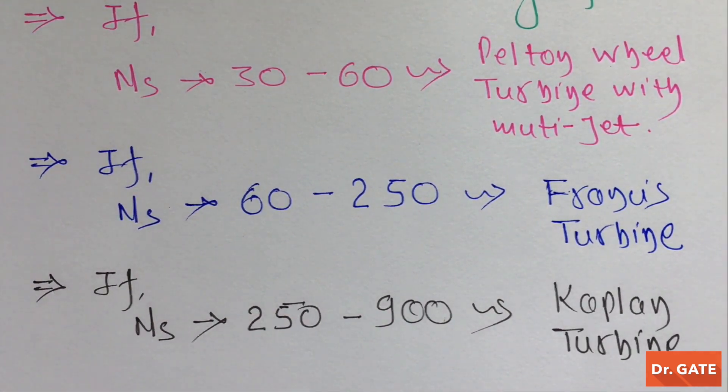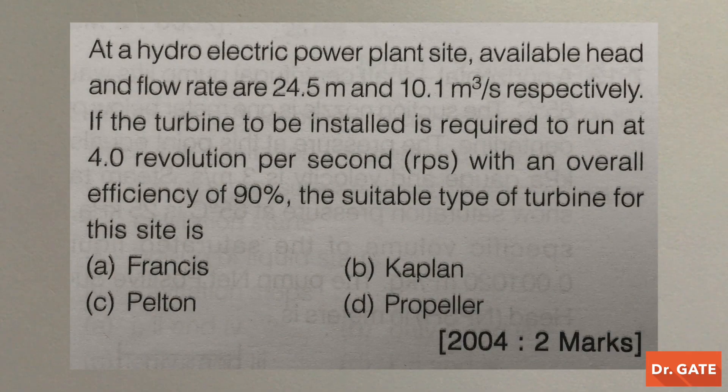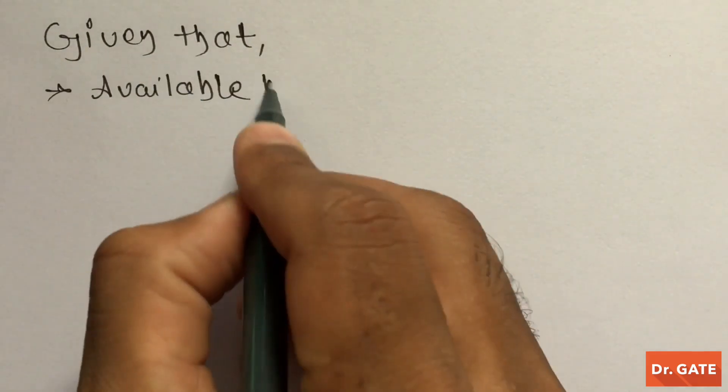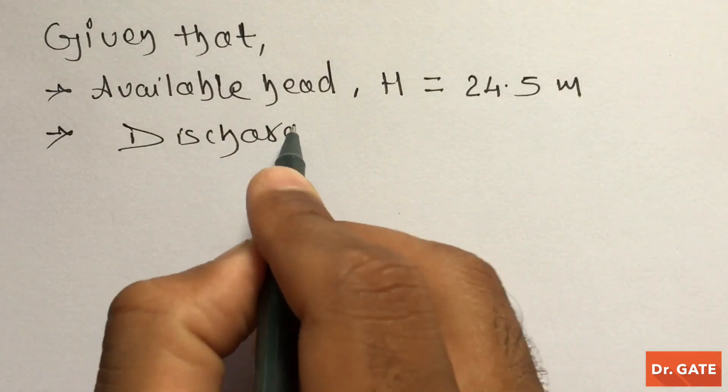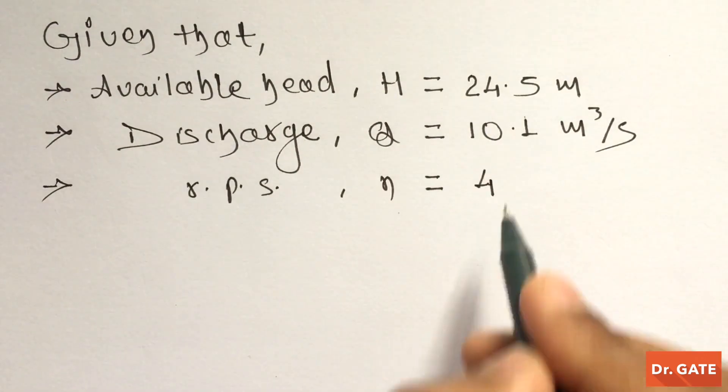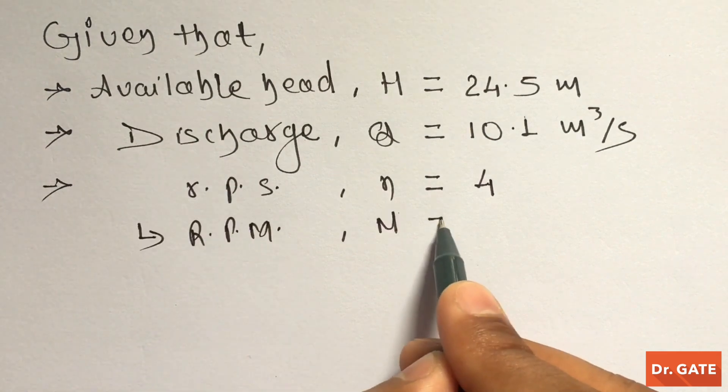Let's solve a numerical for even more better understanding. At a hydroelectric power plant site, available head and flow rate are 24.5 meter and 10.1 meter cube per second respectively. If the turbine to be installed is required to run at 4.0 revolution per second with an overall efficiency of 90%, the suitable type of turbine for this site is. So, what are given? Available head which is 24.5 meter. Discharge which is 10.1 meter cube per second. RPS which is 4. So, from here we can get RPM is 240.